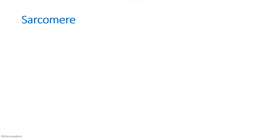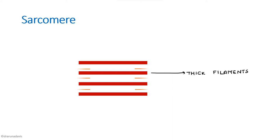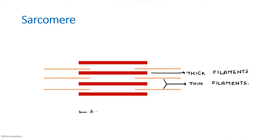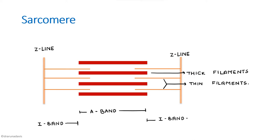So we will see the first one — how can we draw and label a sarcomere? The sarcomere is a region between two Z lines. You can start by drawing the thick filaments, which are composed of myosin, and then the thin filaments, which are composed of actin, troponin, and tropomyosin. Then you can mark the dark band as the A band.